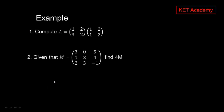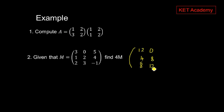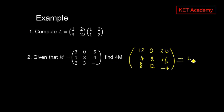Now let's go to the second example: scalar multiplication. We simply multiply each element in the matrix by four. So four times three is twelve, four times two is eight, four times zero is zero, four times three is twelve, four times five is twenty, four times four is sixteen, and four times negative one is negative four. Scalar multiplication also works in reverse — you can factor out the scalar, writing the result as four times the matrix M.